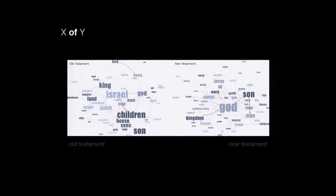You can get a lot of information by just looking at some really common patterns. For example, the pattern 'x of y' applied to both the Old Testament and the New Testament—you can pretty clearly tell which is which just by looking at some of the words and the way they're connected.